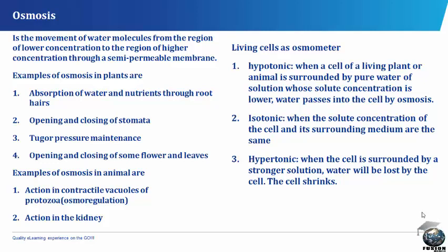Examples of osmosis in plants are: absorption of water and nutrients through root hairs; opening and closing of stomata; turgor pressure maintenance; and opening and closing of some flowers and leaves. Examples of osmosis in animals are: action in contractile vacuoles of protozoa, i.e., osmoregulation; and action in the kidney.